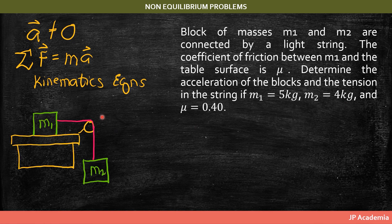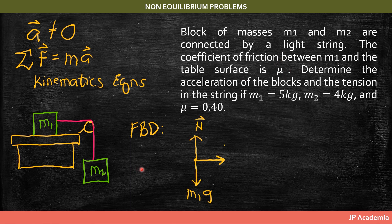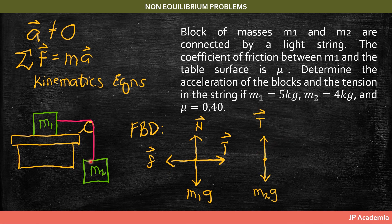Illustrating the scenario: M1 is on the table, M2 hangs via the string. For M1's free body diagram: normal force N upward, weight M1g downward, tension T to the right, and friction to the left. For M2: tension T upward and weight M2g downward. We assume M1 accelerates to the right and M2 accelerates downward.